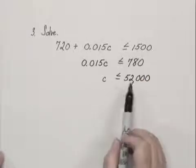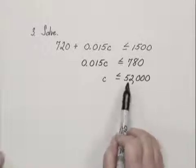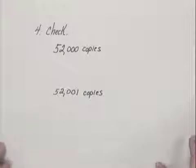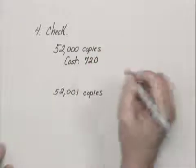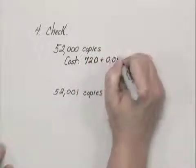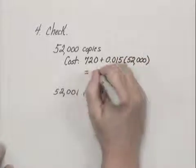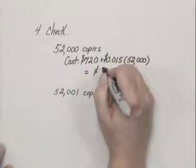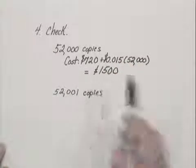Now to check an inequality, a good way to do it is to check where it's equal to 52,000, and then let's check an amount a little bit over 52,000 to see if that costs too much money. If we check for 52,000 copies, the total cost would be the $720 rental plus $0.015 times 52,000, which equals $1,500. So right at 52,000 copies, the cost would be $1,500.